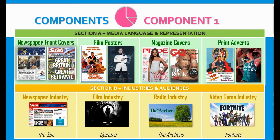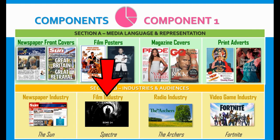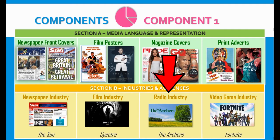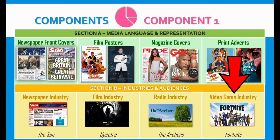Then in Section B we go behind the scenes of media — we see what the industries are like, how they create media products, and how they make money by appealing to different audiences. We will study The Sun newspaper and its website, the film industry and the marketing behind Spectre and its website, a very famous radio show called The Archers — a bit of a soap opera, very dramatic, set in a farming area — and lastly, we will study Fortnite: the video game industry, how they make money, and how they find audience members.